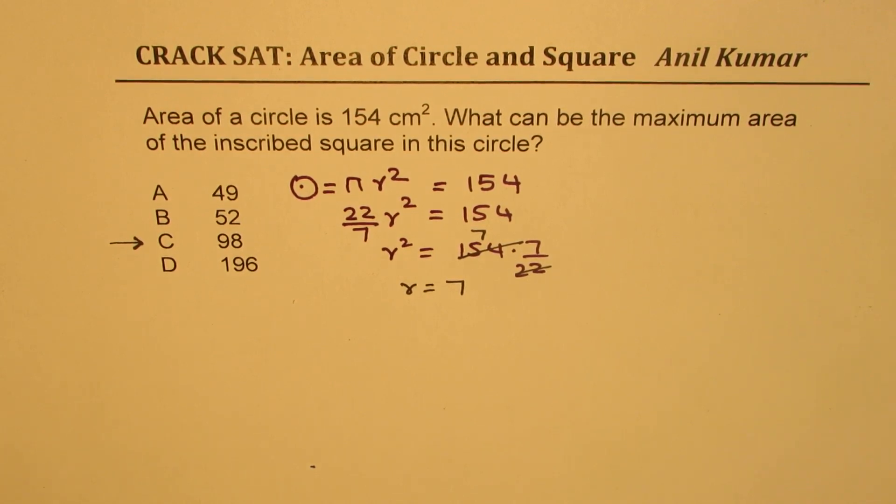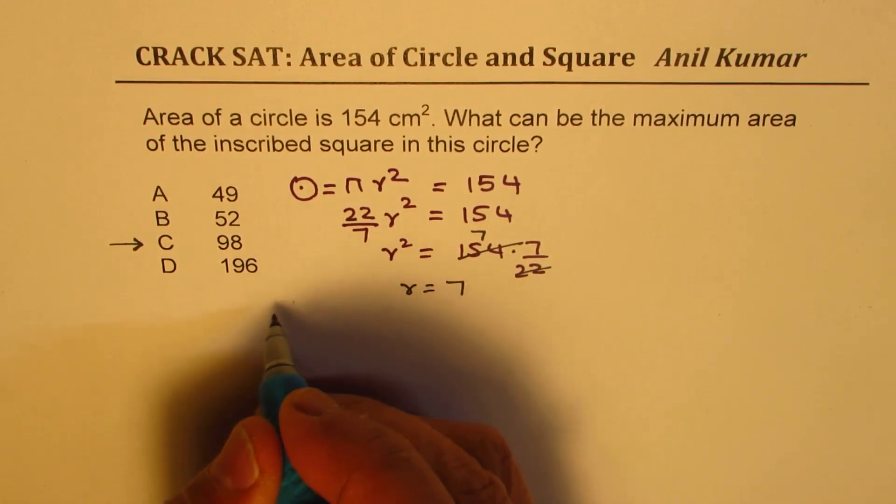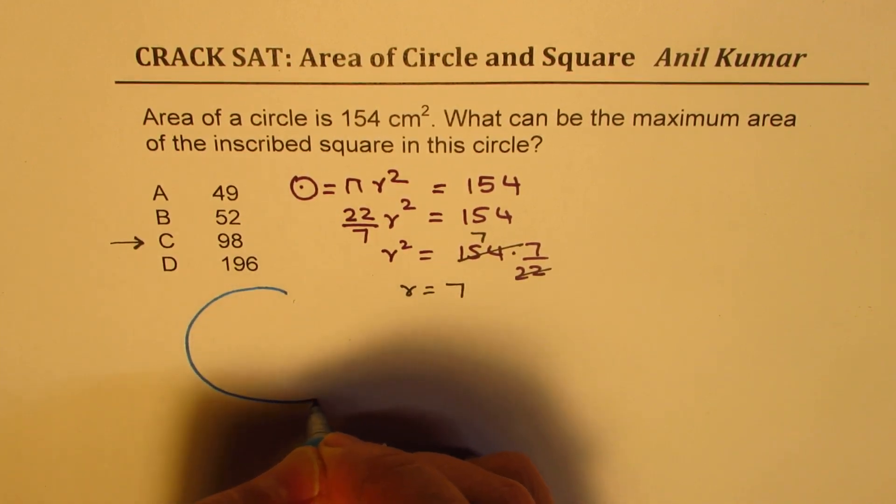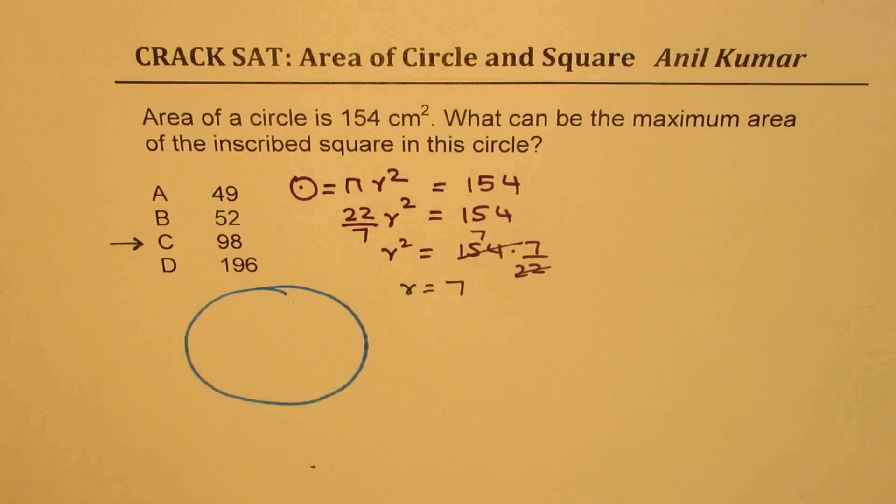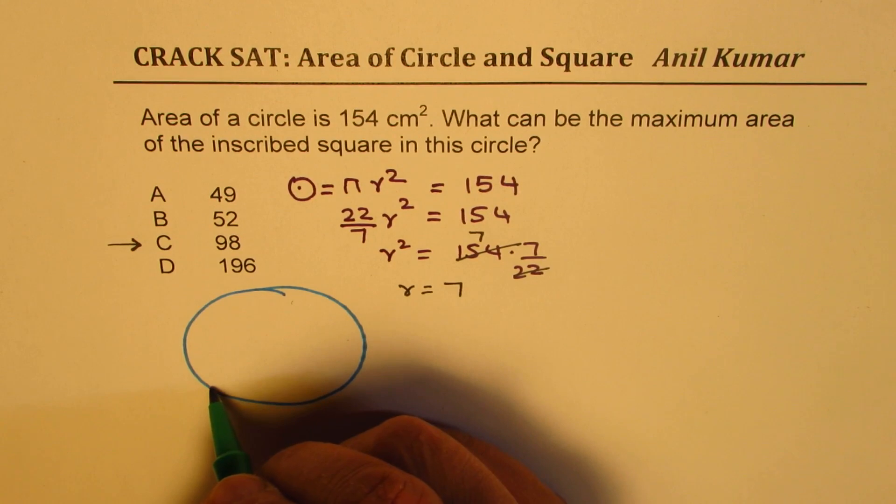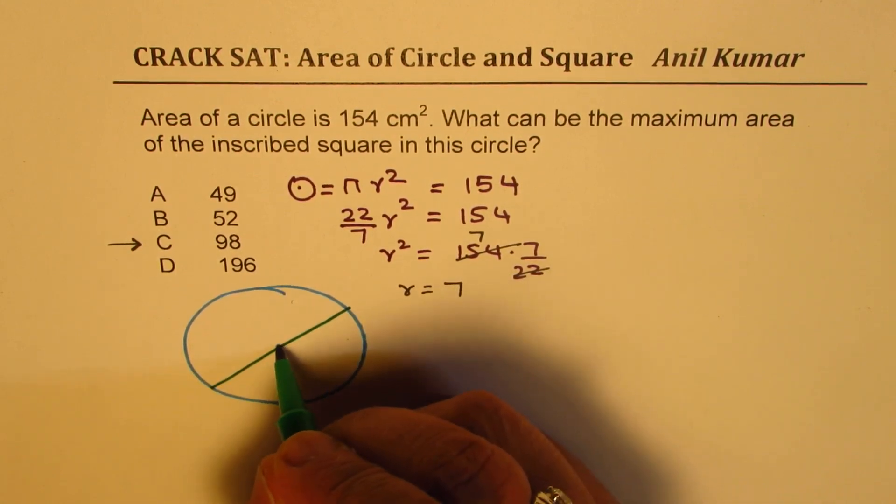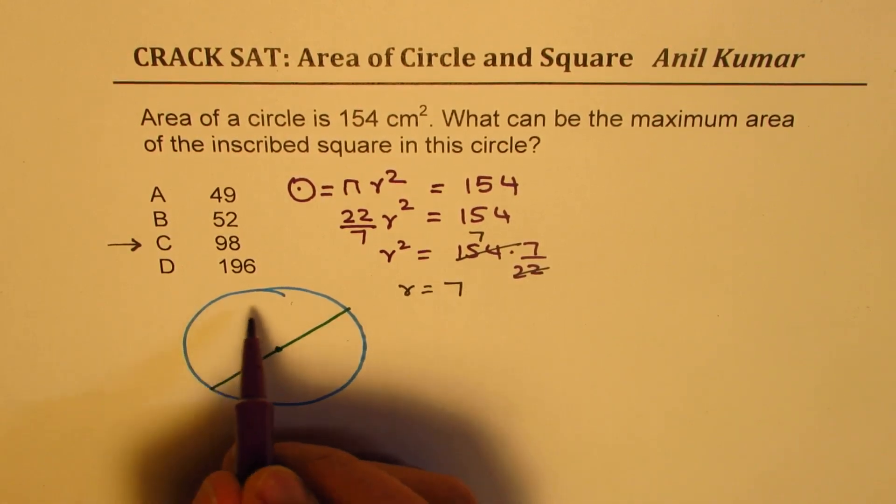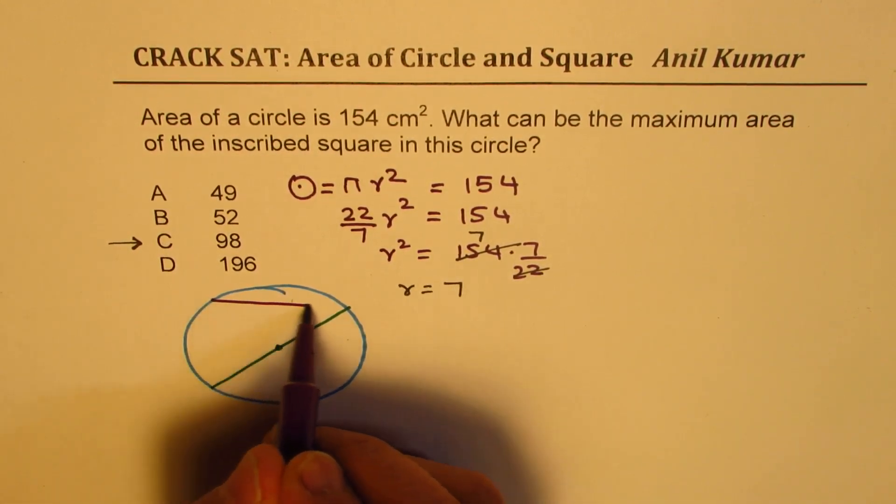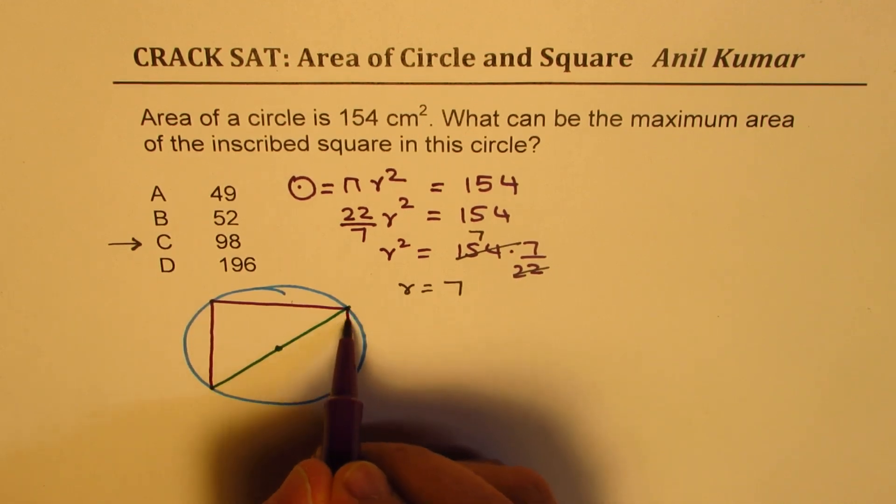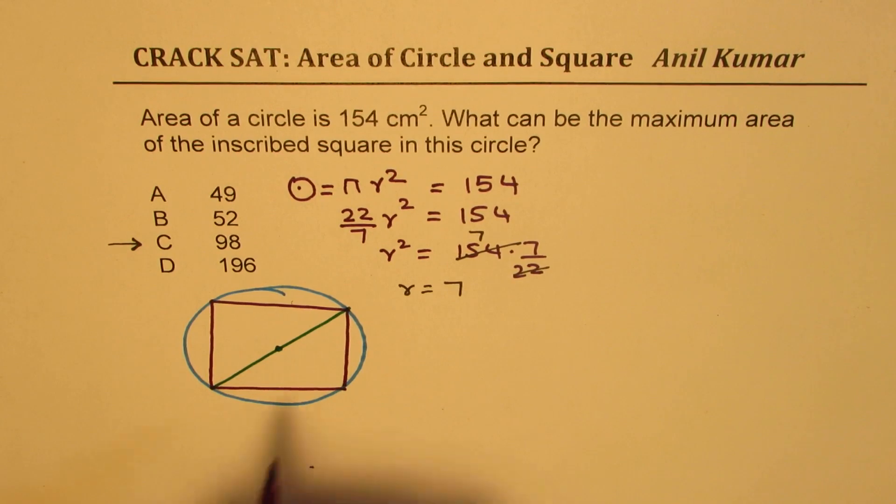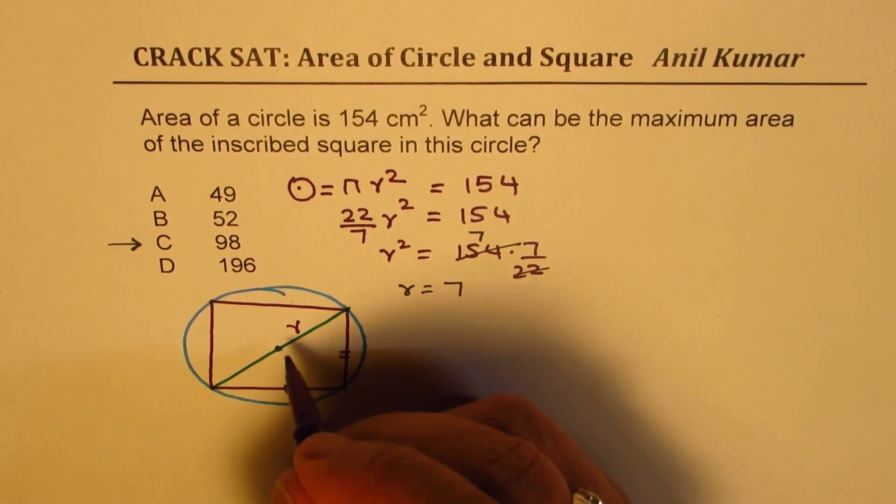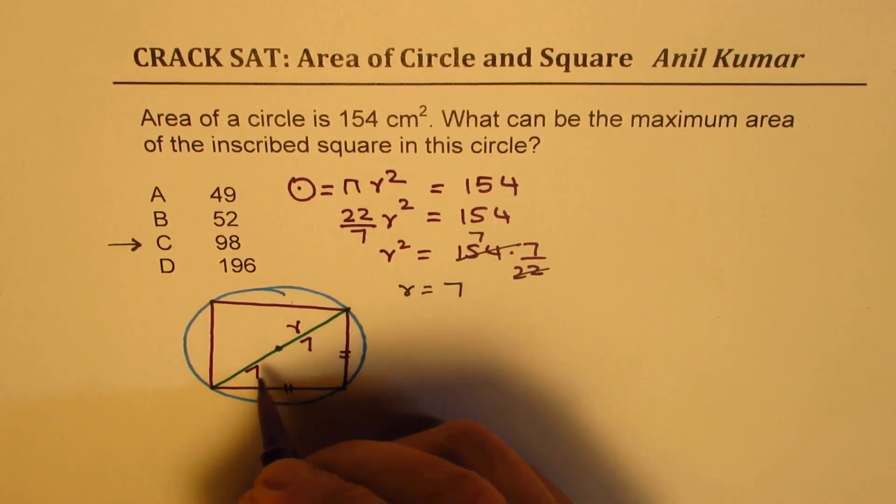But just getting radius doesn't really solve our question. We need to still find area of the square, which can be inscribed inside the circle. So what we got here is we got the radius. But we are really interested in finding area of this square. Let's make one square inside this particular circle. We want area of this square. Now, we know this r, which is 7. So this is also 7.